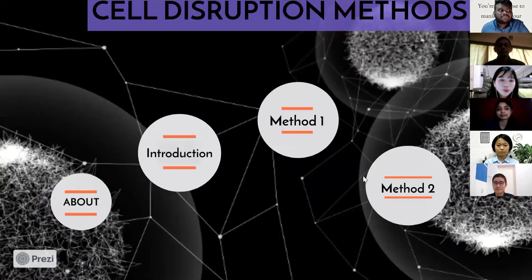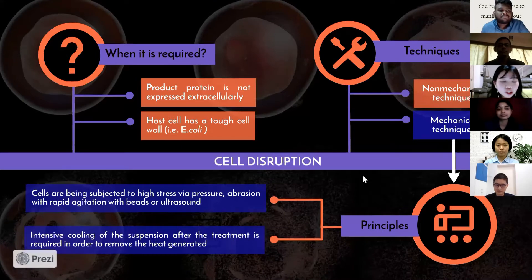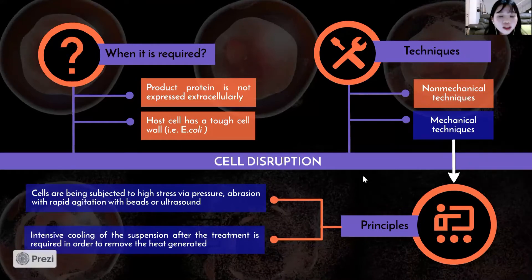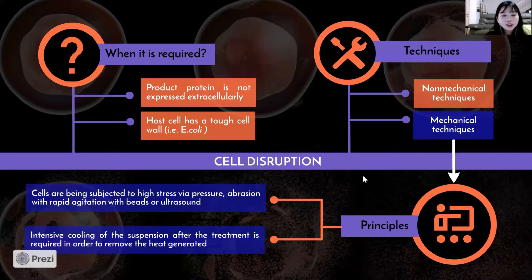Cell disruption is required when the product protein is not expressed extracellularly and the host cell has a tough cell wall, for example E. coli. It can be classified into non-mechanical techniques and mechanical techniques, where we will only focus on mechanical techniques in our presentation. The principles of mechanical techniques are that cells are subjected to high-stress field pressure, abrasions with rapid agitation with beads, or ultrasound. Intensive cooling of the suspension is required after treatment to remove heat generated by dissipation of mechanical energy.